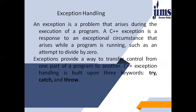Exceptions provide a way to transfer control from one part of a program to another. C++ exception handling is built upon three keywords: number one, try; number two, catch; number three, throw. The try statement allows you to define a block of code to be tested for errors while it is being executed. The throw keyword throws an exception when a problem is detected, which lets us create a custom error. The catch statement allows you to define a block of code to be executed if an error occurs in the try block.